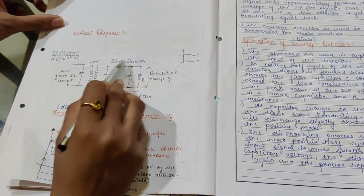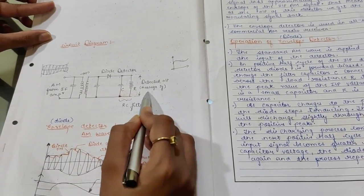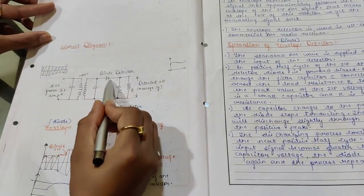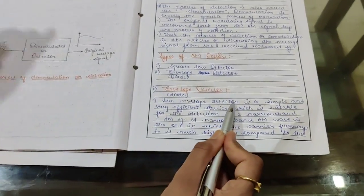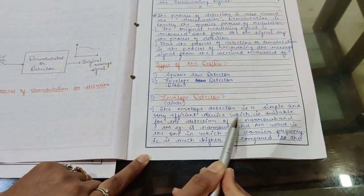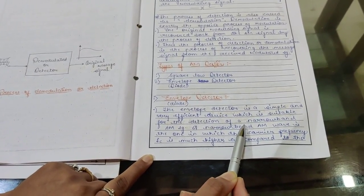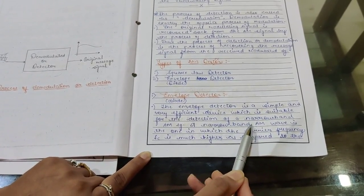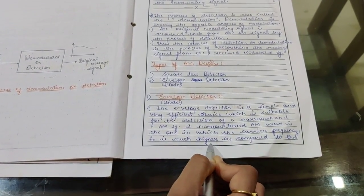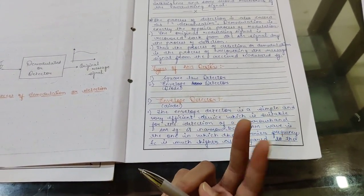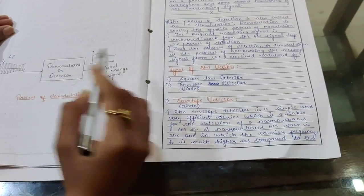Let us see in detail about the envelope detector. The envelope detector is also called a diode detector. In the circuit diagram, we place the diode detector where the main information signal is applied, and at the receiver we detect the message signal. The envelope detector is a simple and very efficient device suitable for the detection of narrow band AM signals. For AM signal transmission, two bandwidths are required: narrow bandwidth and wide bandwidth.